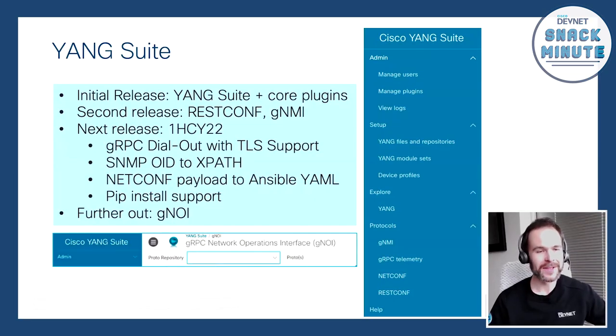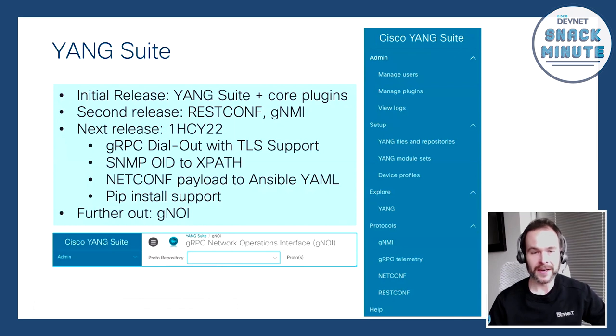We are actually thinking of some naming changes, because as you can see on here, we have a little teaser into some further-out work happening with GNOI — the gRPC Network Operations Interface. This is an API that doesn't use Yang; it uses protobuf. So is it appropriate to call the tooling Yang Suite or bake this functionality in? We already support GNMI and gRPC, so it's potentially more apropos to change the name. And those also use Yang in addition to the protobuf APIs.